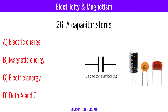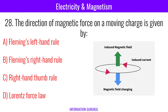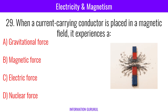A capacitor stores electric charge and electric energy. Which of the following materials is not a magnetic substance? Aluminum. The direction of magnetic force on a moving charge is given by Lorentz force law. When a current carrying conductor is placed in a magnetic field, it experiences a magnetic force.